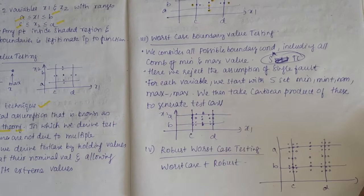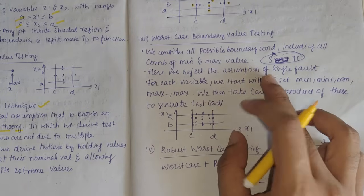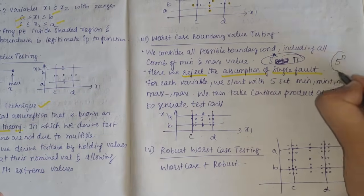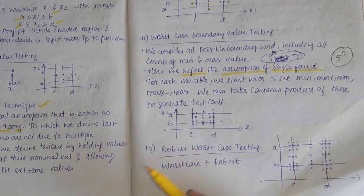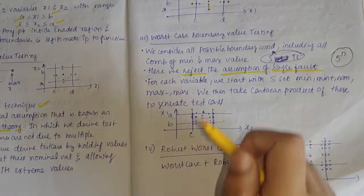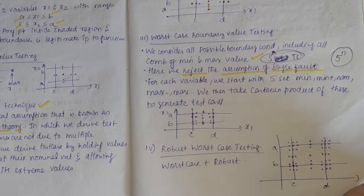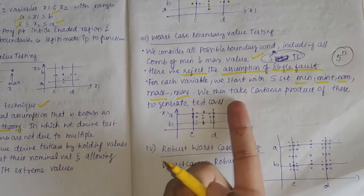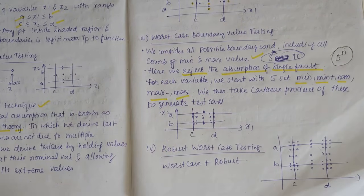In worst case BVA, we reject the single fault assumption. We generate 5^n test cases. For 3 input variables, that is 5^3 = 125 test cases. We consider all possible boundary conditions including all combinations of minimum, minimum plus, nominal, max minus, and max. We take the Cartesian product of these five sets to generate inputs.